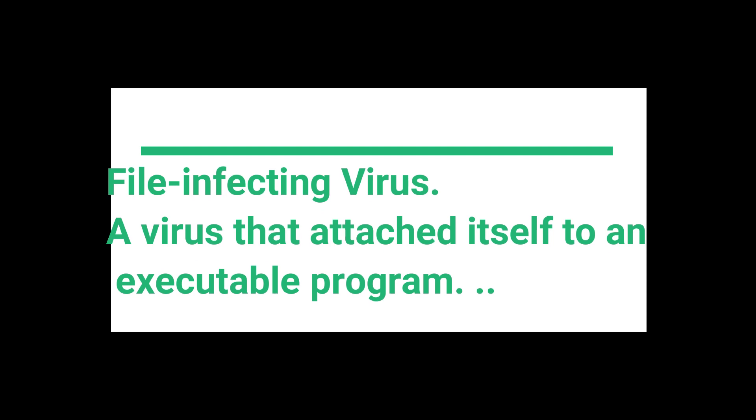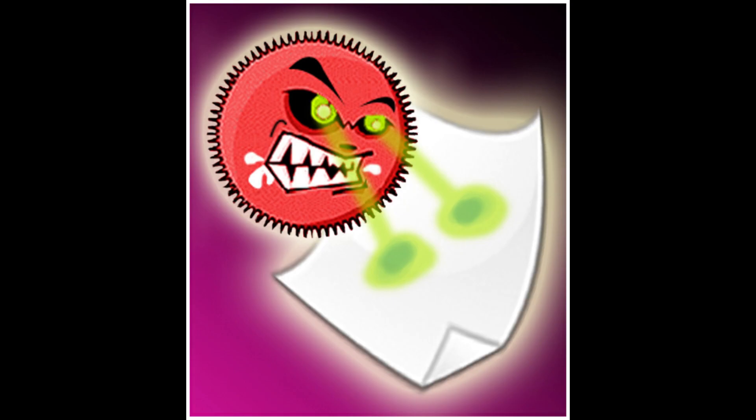The first type is the file infecting virus — a virus that attaches itself to an executable program. Mainly, if we have written code in our computer, this virus attacks that code and damages it.